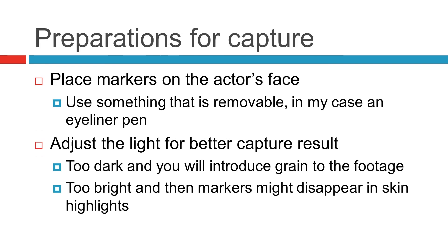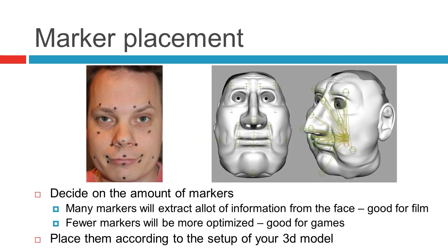Start by placing the markers on the face — use something that is removable. In my case, I used an eyeliner pad. Light the room adequately where the shoot is going to take place: too dark and you will introduce grain to the footage, which might generate jittery movement down the line; too bright and the markers might disappear in skin highlights. Decide on the amount of markers for your project. Many markers will enable you to extract a lot of information from the face, which is good for film or high-end productions. Fewer markers will be more optimized, making the solution good for games or real-time applications. The placement of the markers should mimic the bone setup of your 3D character, meaning it should be in the same general area of the face.